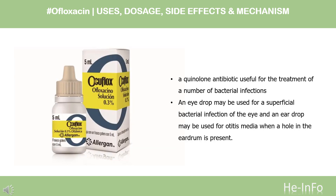What is ofloxacin? Ofloxacin is a quinolone antibiotic useful for the treatment of a number of bacterial infections. When taken by mouth or injection into a vein, these include pneumonia, cellulitis, urinary tract infections, prostatitis, plague, and certain types of infectious diarrhea. An eye drop may be used for a superficial bacterial infection of the eye, and an ear drop may be used for otitis media when a hole in the eardrum is present.